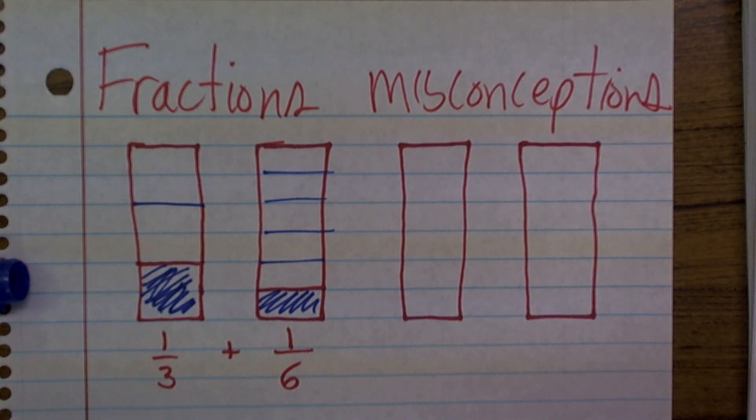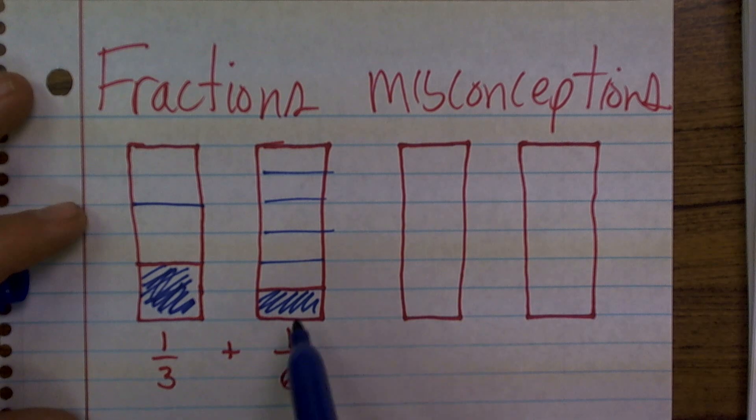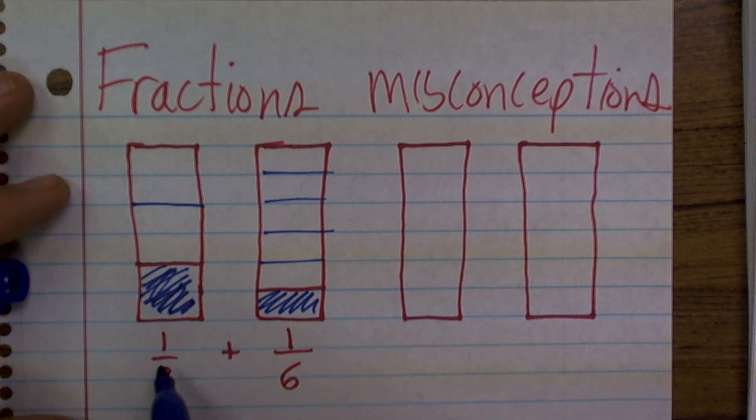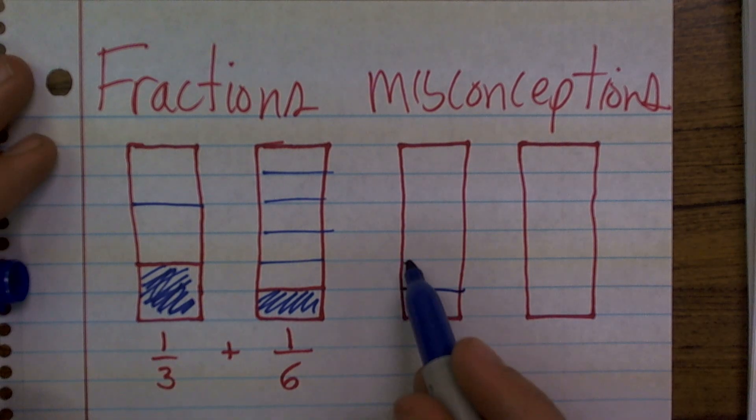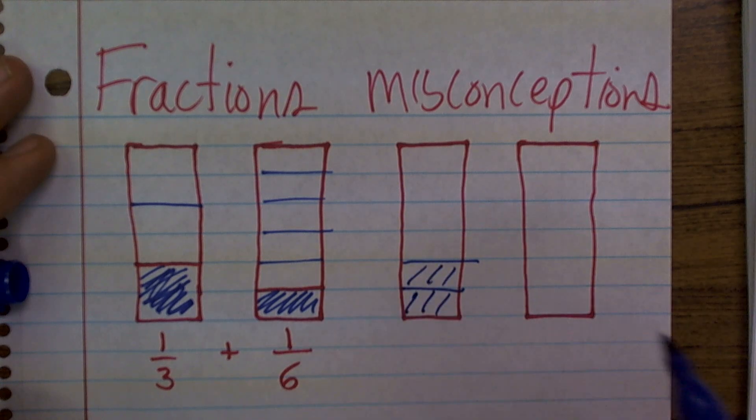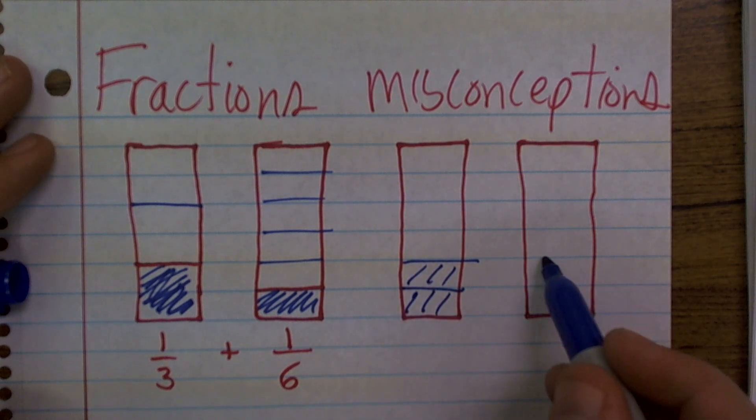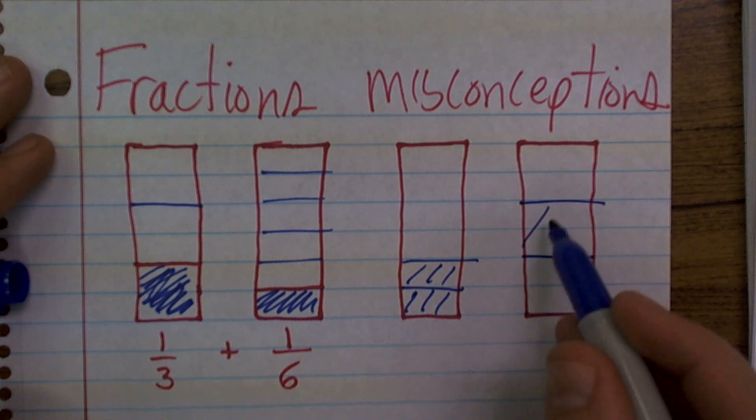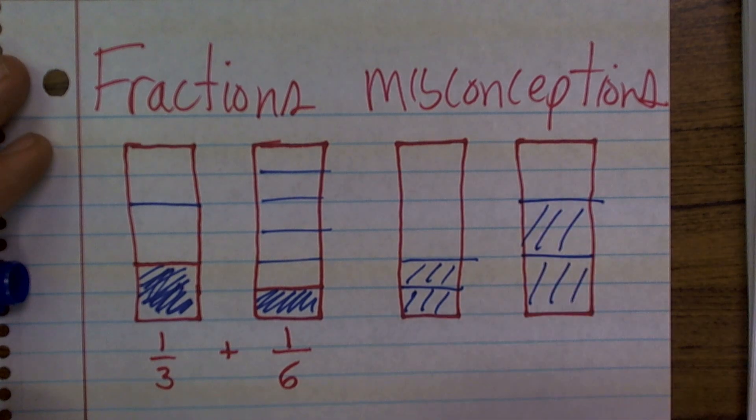Well, here's the problem. Is that going to be 2 sixths, or is it 2 thirds? Because 2 sixths looks like this, and 2 thirds would be that tall, right?